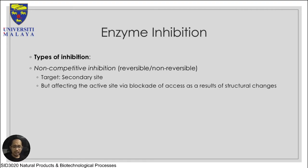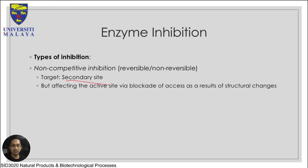The second type of inhibition is non-competitive inhibition - the name already defines what it does. It inhibits the enzyme but not at the active site. It acts at a secondary site, or third site, or reported site - it doesn't matter as long as it's not on the active site. Then we call it a non-competitive inhibitor.